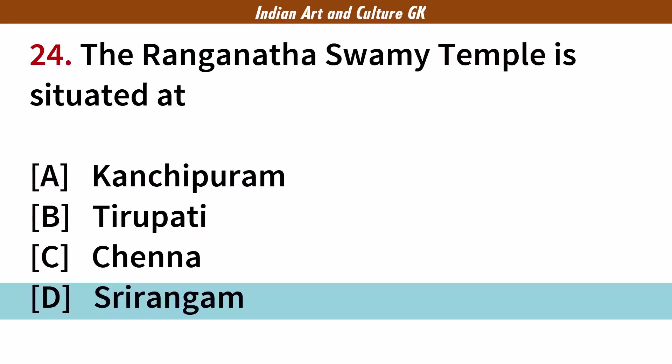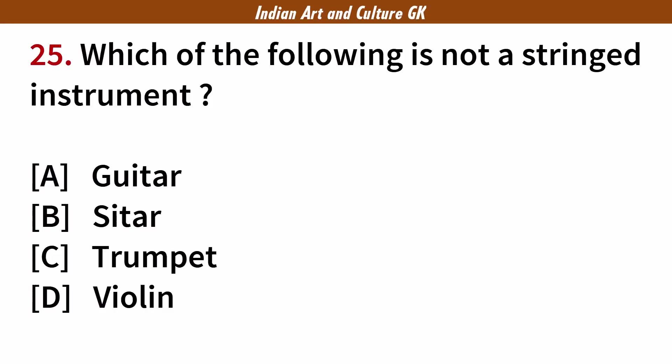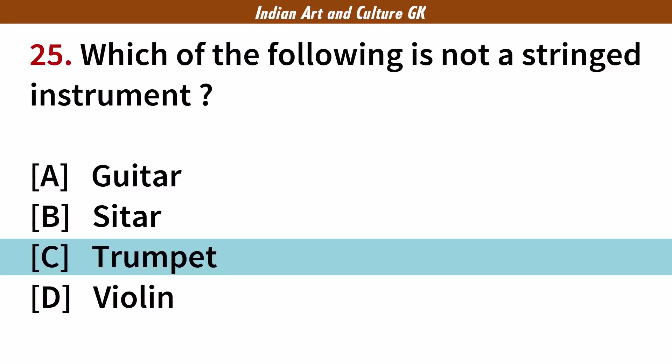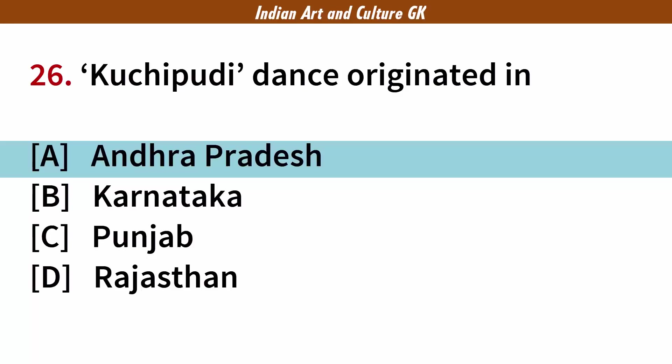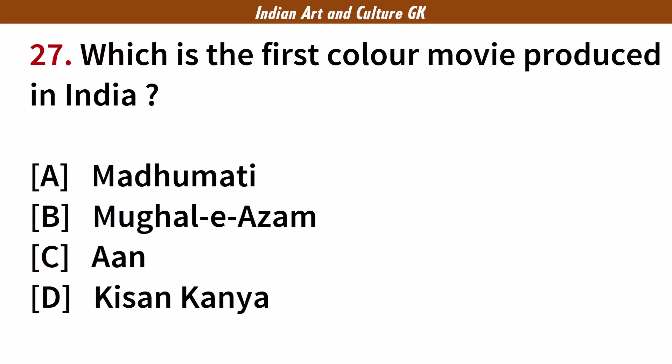Which of the following is not a string instrument? Answer: C. Trumpet. Kuchipudi dance originated in? Answer: A. Andhra Pradesh. Which is the first color movie produced in India? Answer: D. Kisan Kanya.